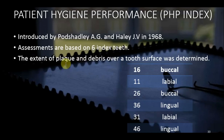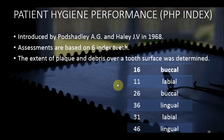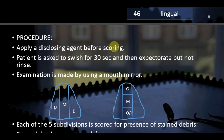Debris is a loosely arranged collection of food particles, mucins, and bacteria; plaque is a tenacious adherent biofilm on hard surfaces. Plaque is not visible to the naked eye — debris is. To make plaque visible, a disclosing solution must be applied. In the PHP procedure, a disclosing agent is applied and the patient swishes for 30 seconds, then expectorates but does not rinse. Examination is performed using a mouth mirror.